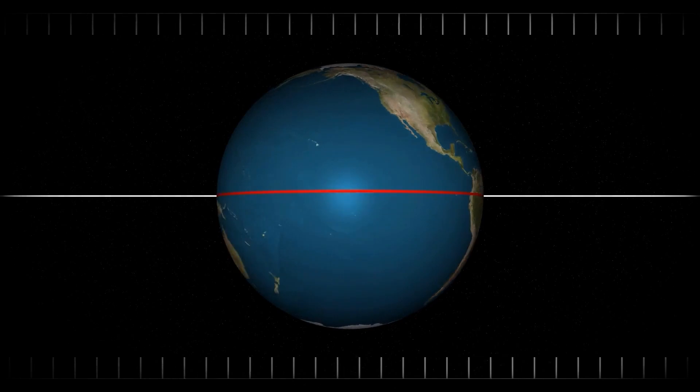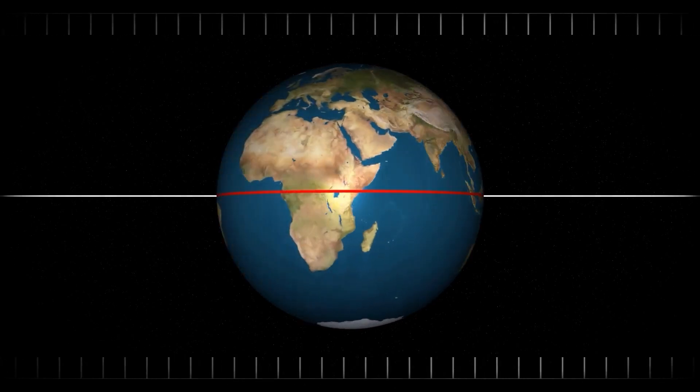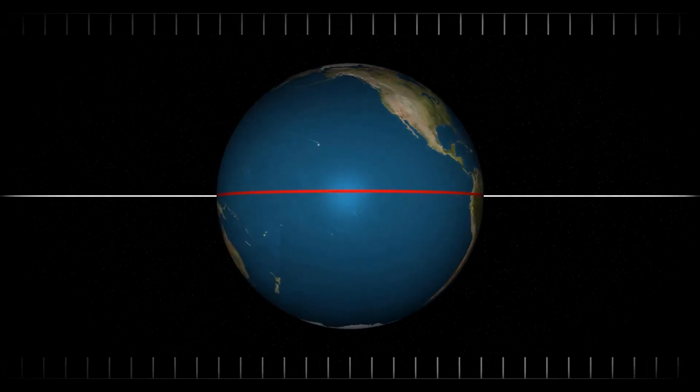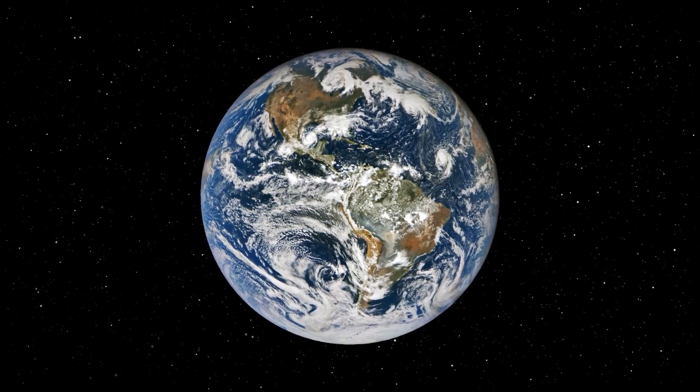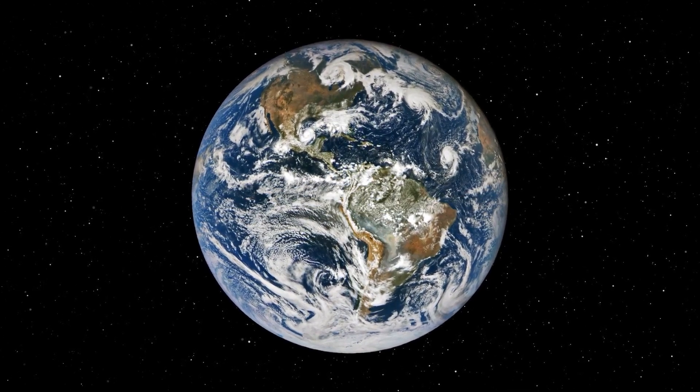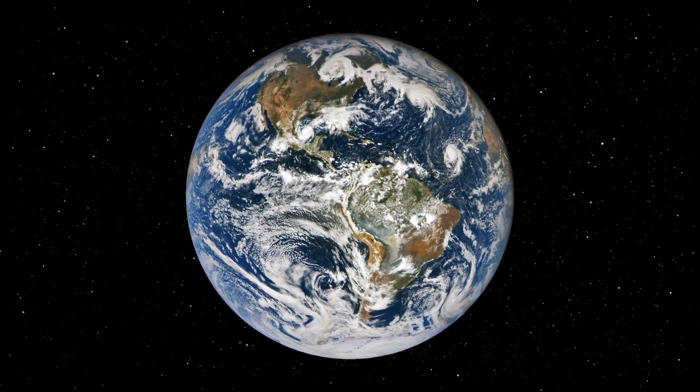Scientists found that its axial tilt, the angle at which it spins, is stable, just like ours. That's a big deal because it means the planet could have a predictable, life-supporting climate over long periods of time.